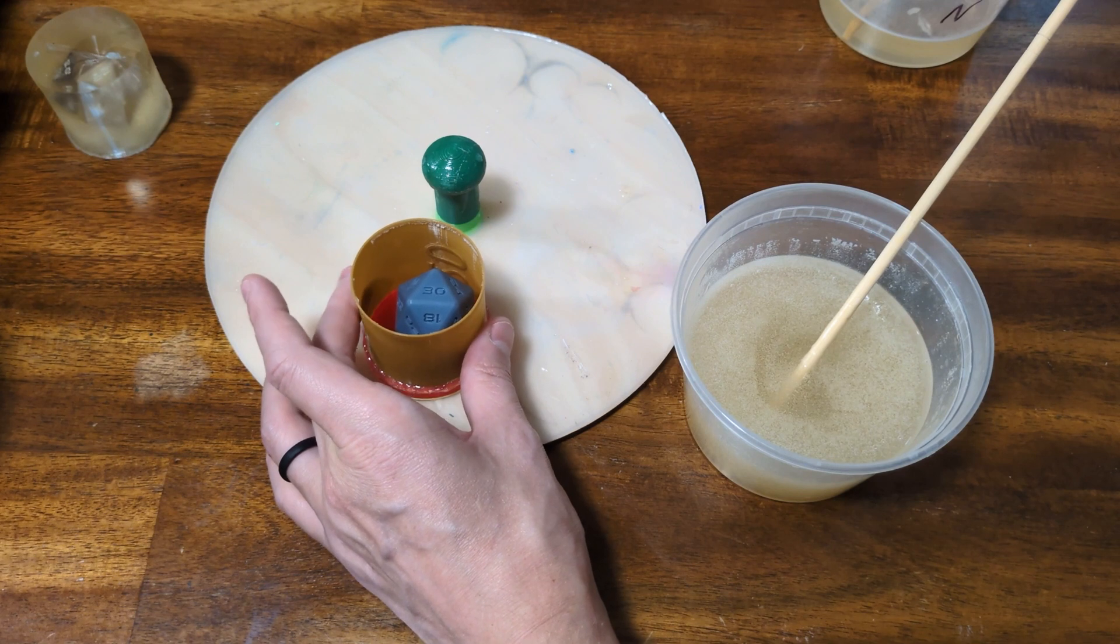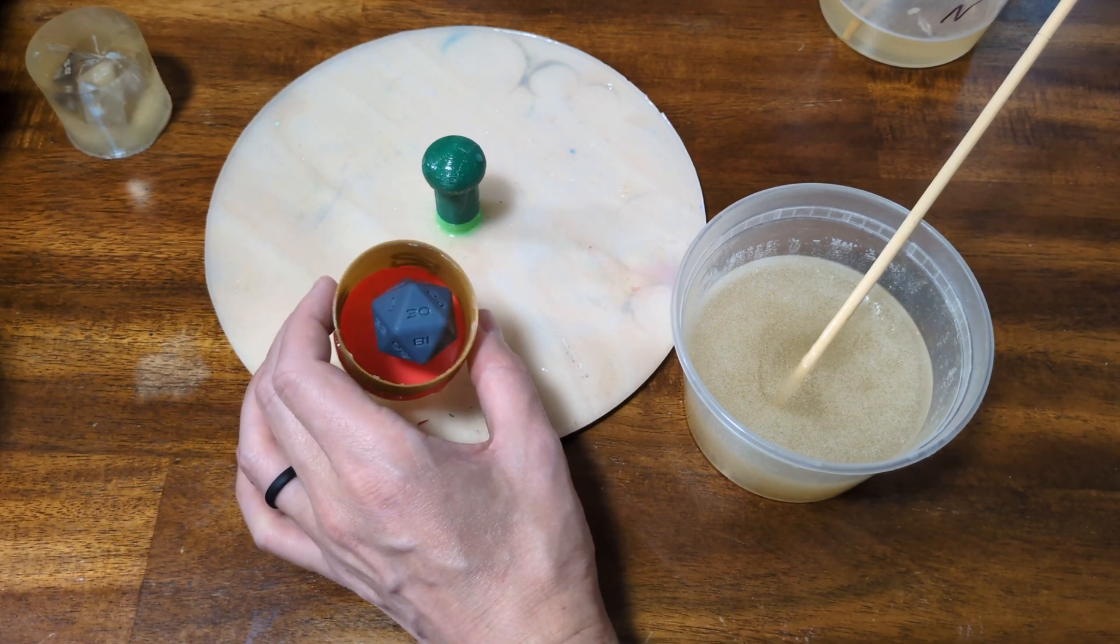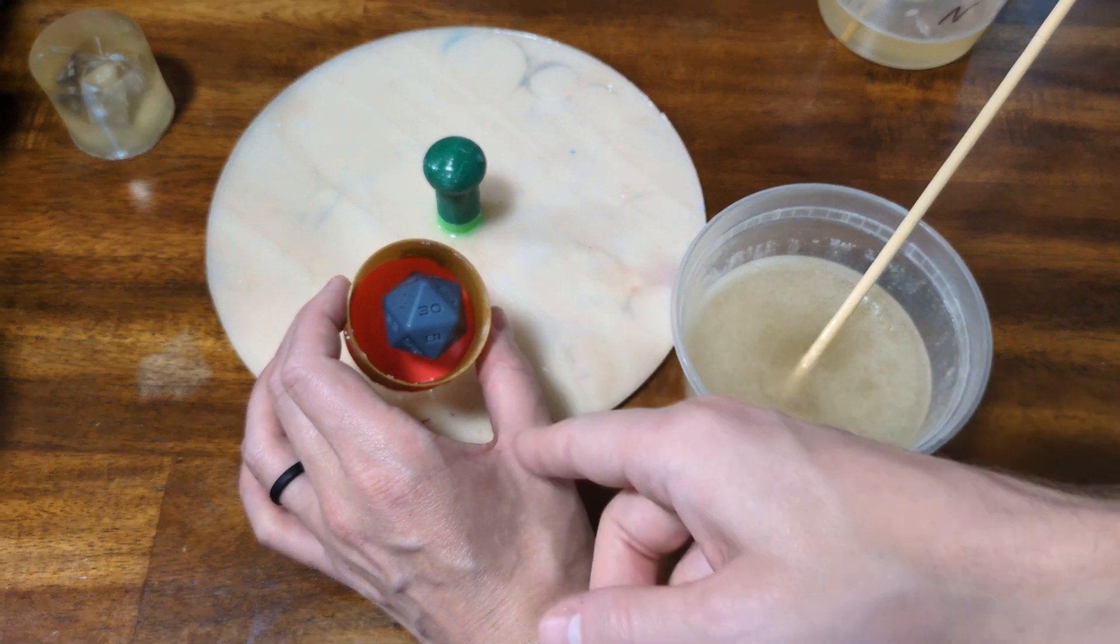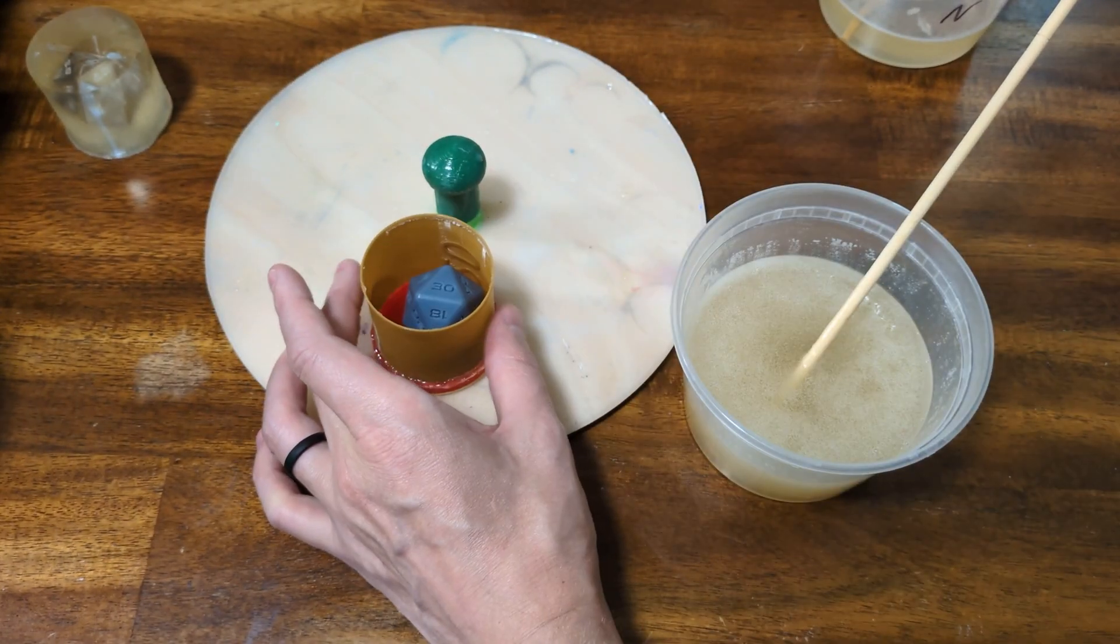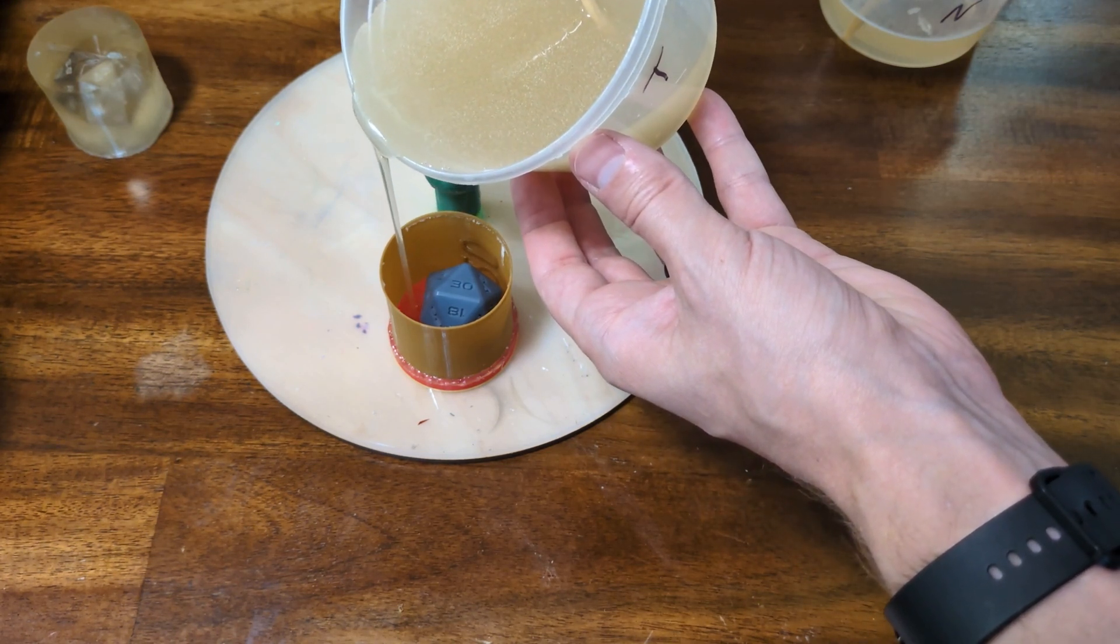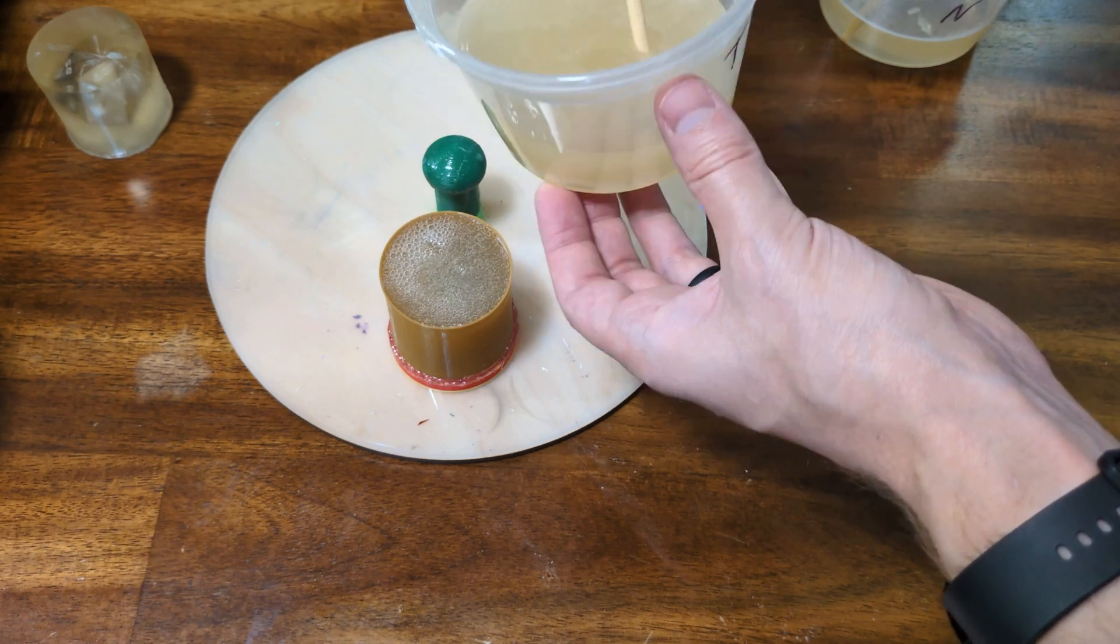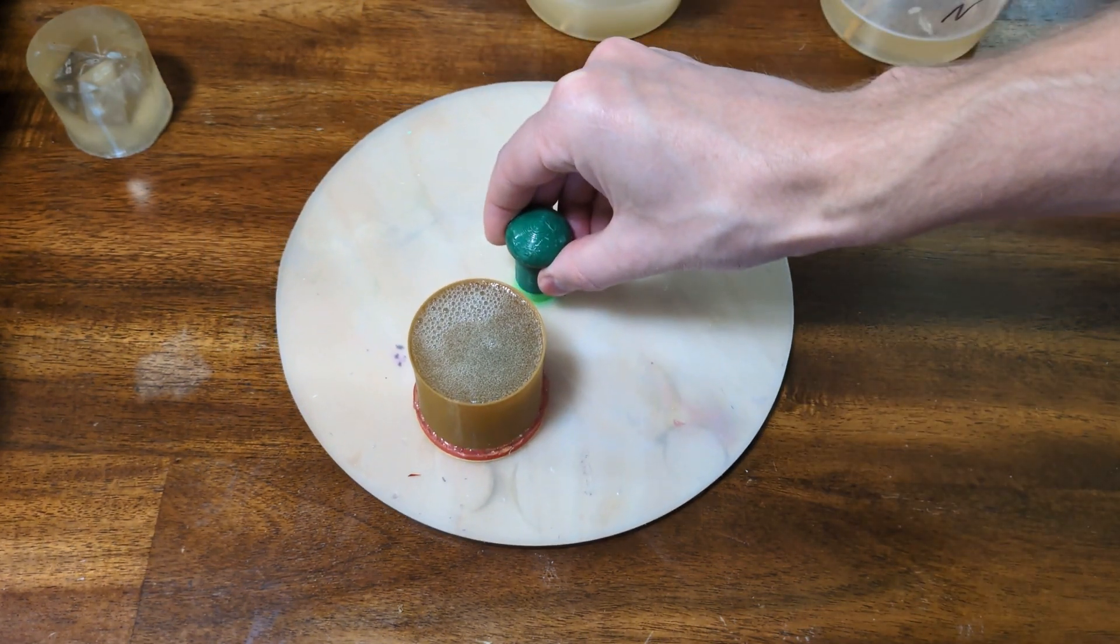It did start to deform the plastic a little bit, but as you can tell, everything actually ended up being just fine. Even the thin little slit was able to keep its shape and everything. Now we'll put that in the pressure pot and let it cure.